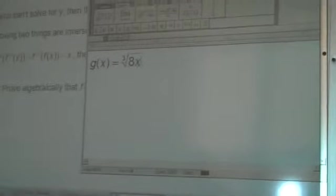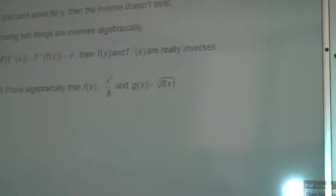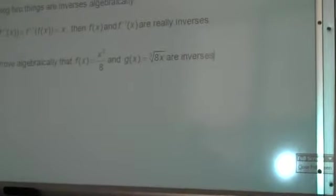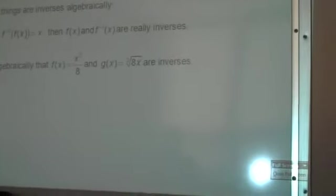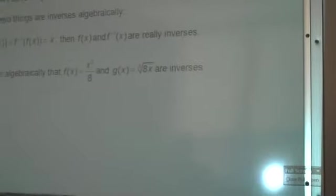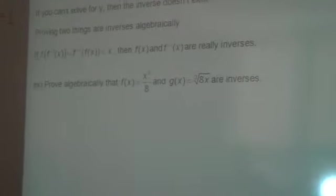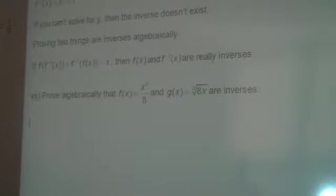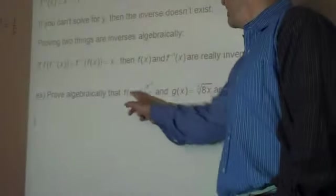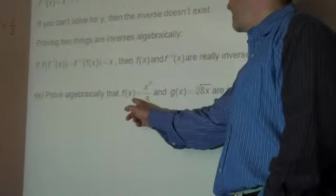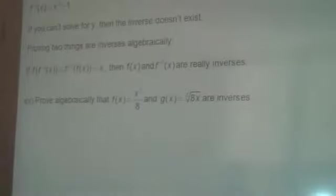And g of x equals cube root of 8x. Stretching or have a question, sir? Excellent. Equals 8x are inverses. I figured that out. Okay, prove algebraically that f of x equals x cubed over 8 and g of x equals cube root of 8x are inverses. What this means is you have to find f of g of x, that's a notation you were working on last night, and g of f of x, and they should both equal x.